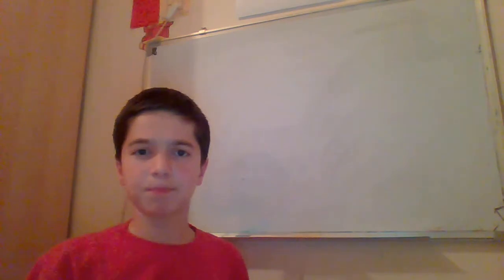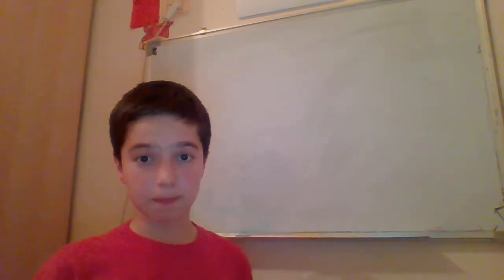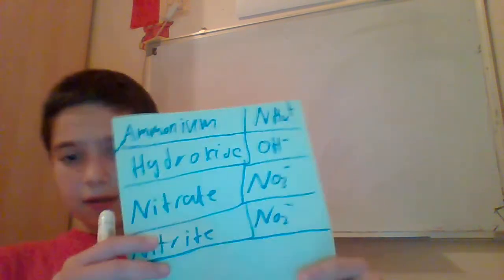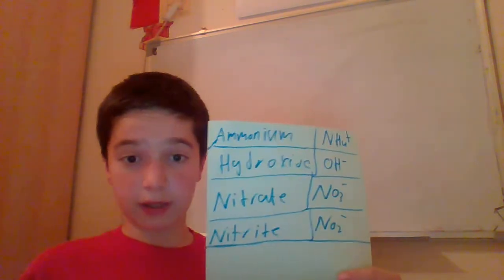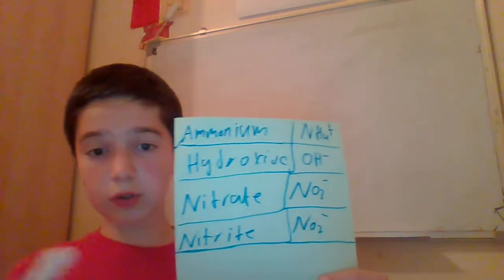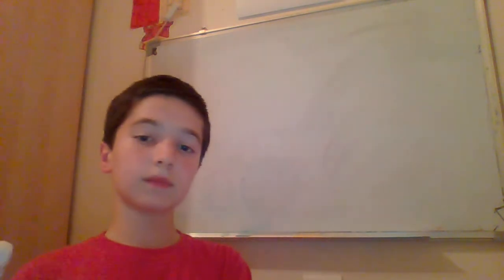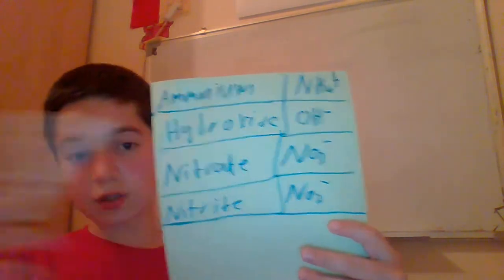Our last example is going to use polyatomic ions. Polyatomic ions are groups of elements that combine together and have a charge. Here are some polyatomic ions. We're going to use nitrate, which has the symbol NO₃ and a charge of minus one.